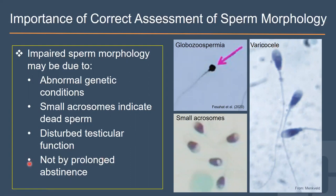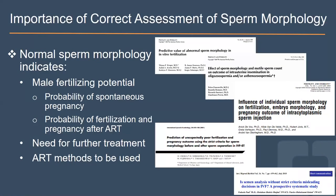Normal sperm morphology is not dependent on the abstinence period, whereas other parameters such as ejaculatory volume, sperm count, or even DNA fragmentation are related to abstinence period. In general, we can say that normal sperm morphology indicates the male fertilizing potential and gives a probability of fertilization and pregnancy after spontaneous and assisted reproduction.